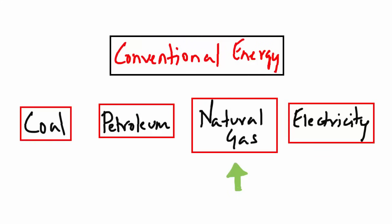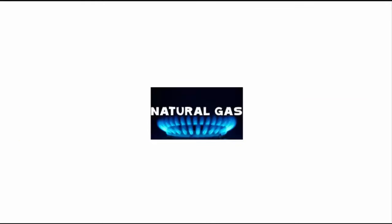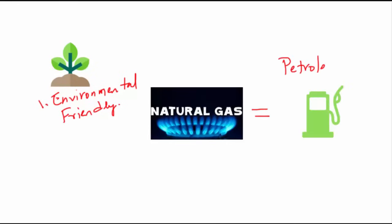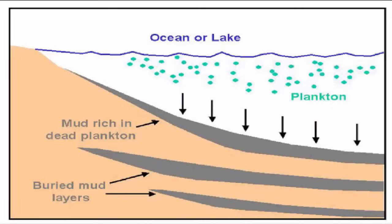The third type of conventional energy is natural gas. It is considered an environmentally friendly fuel because of low carbon dioxide emissions. But it is associated with petroleum. In fact, its formation is also pretty much the same like petroleum.